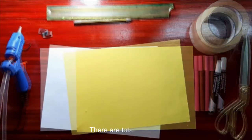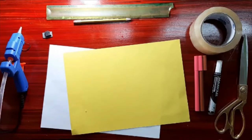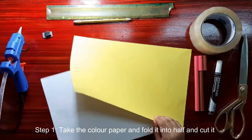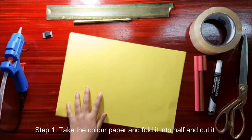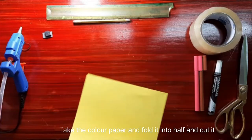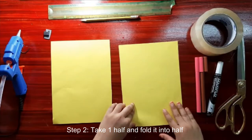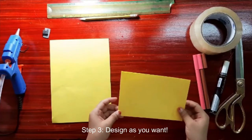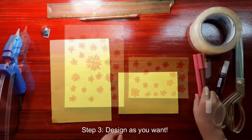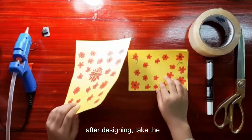There are total five steps. Step one: take the color paper and fold it into half and cut it. Step two: take one half and fold it into half. Step three: design as you want. After designing, take the other half and then fold it.